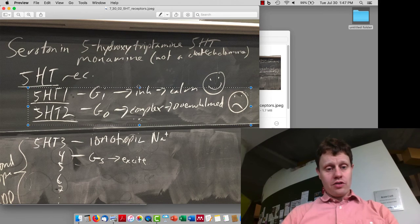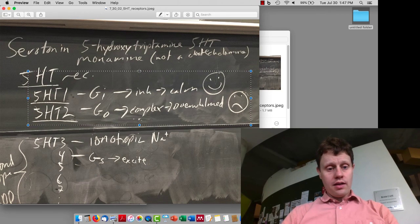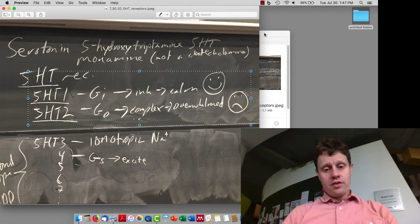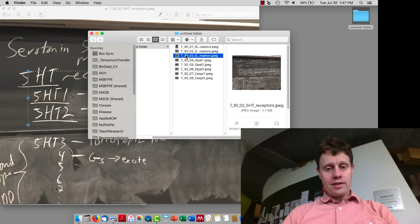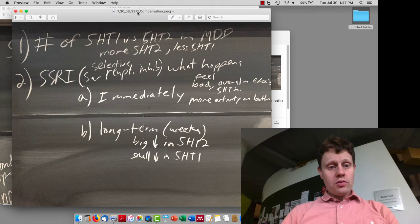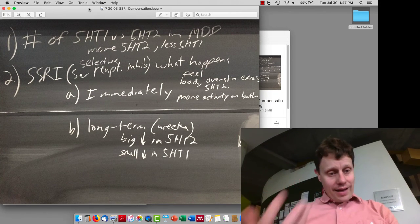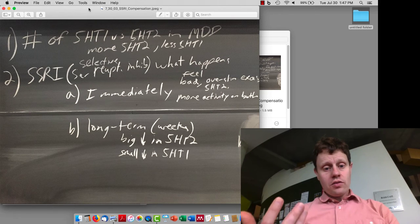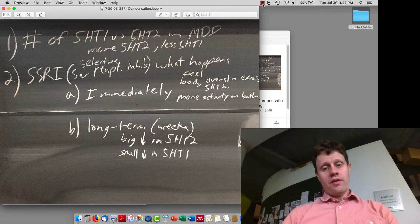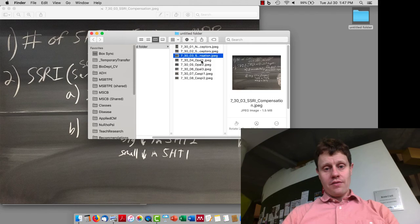The inhibitory 5-HT1s tend to be calming, and the cellularly complex 5-HT2s tend to have this overwhelming aspect. Similar to norepinephrine, there's evidence that enhancing the amount of serotonin leads to a bigger decrease in the number of 5-HT2s as compared to the number of 5-HT1s.